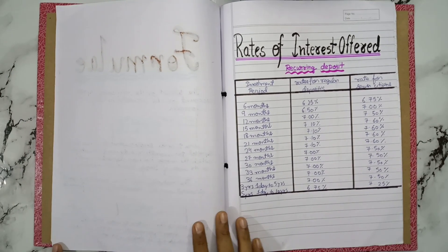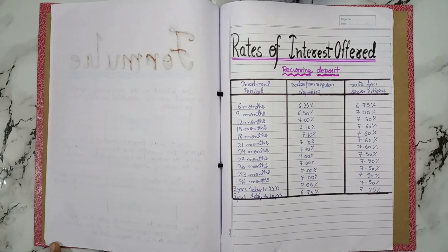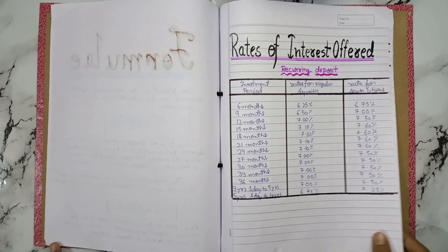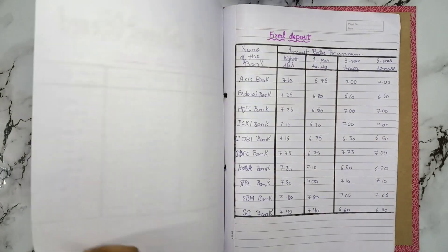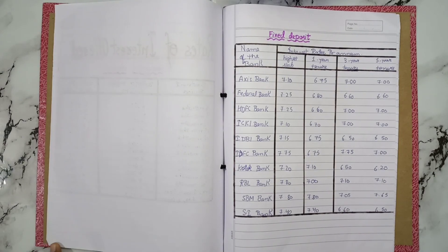Next it is rate of interest offered. A chart is given here. These are for fixed deposit.